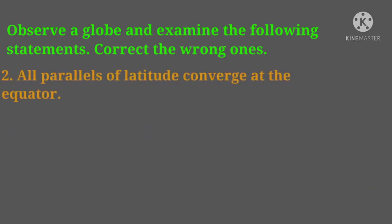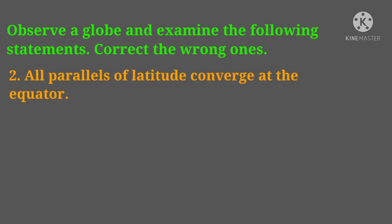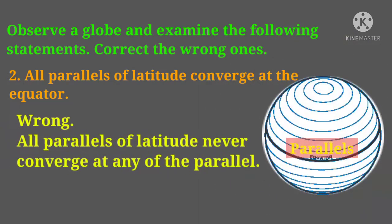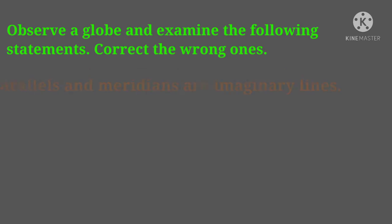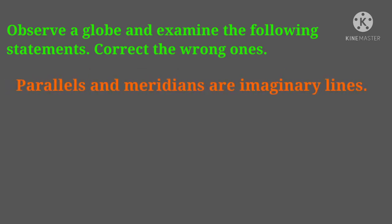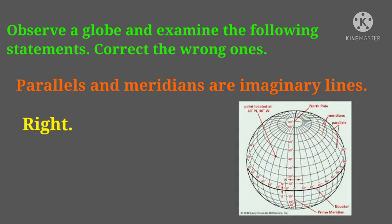Second statement: all parallels of latitude converge at the equator. This is wrong. All parallels of latitude never converge at any of the parallels. Third statement: parallels and meridians are imaginary lines. This is right — parallels and meridians are imaginary lines; we cannot draw such lines exactly on the earth.